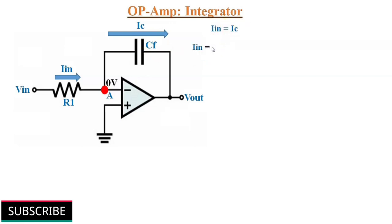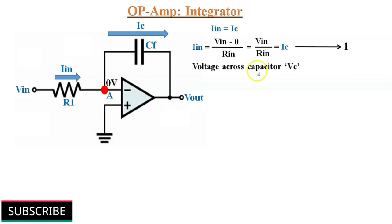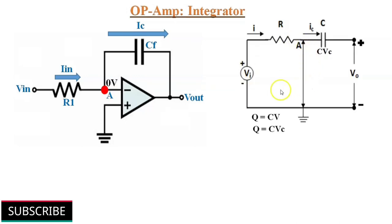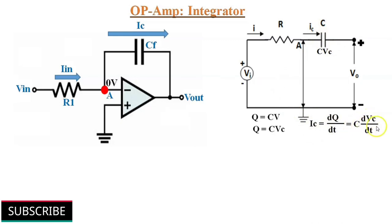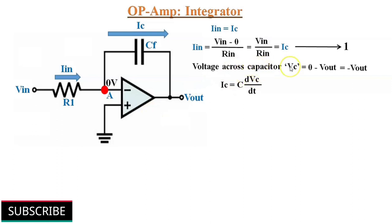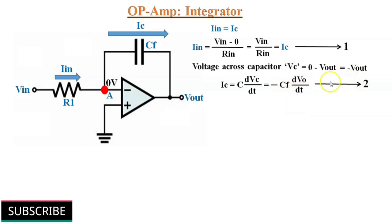We can write Iin as Vin minus 0 divided by Rin, which equals Vin by Rin. Let's consider this equation 1. Also, voltage across capacitor Vc equals 0 minus Vout, that equals minus Vout. Here I am showing an equivalent feedback circuit. As we know, charge across the capacitor Q equals C into V. So the capacitor current Ic equals the rate of change of charge with respect to time. Since capacitance is not changing, our expression is Ic equals C multiplied by dVc/dt. We can write capacitor current Ic equals minus Cf multiplied by dVout/dt. Let's call this equation 2.